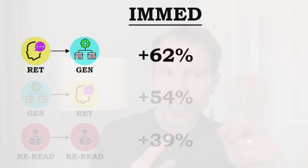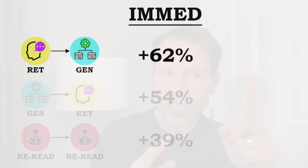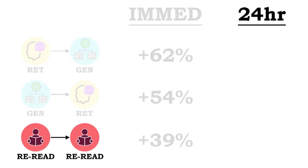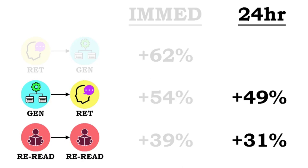They retested the students 24 hours later. The reread group's scores dropped to 31% improvement — about an 8% drop. The generative-first, recall-second group dropped to 49% improvement, about a 5% drop. The retrieval-first, generative-second group dropped to 58%, only a 4% drop — and still 9% higher than the other study group. So not only do techniques matter, but the order of the techniques starts to matter too.